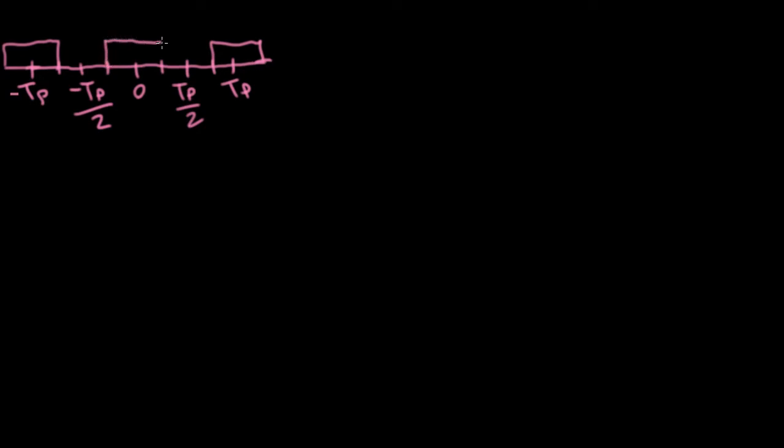We started by reviewing the idea of Fourier series, and I'm drawing here once again our typical example of a square wave going between 0 and 1. Here I'm using t sub p instead of t sub 0, as we usually have previously, because I want to contrast with the t sub s that we used in the sampling lecture.